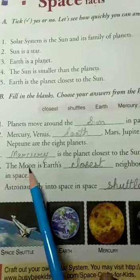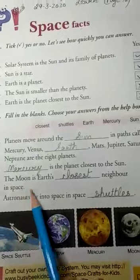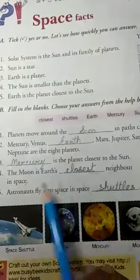Number four: The moon is Earth's closest neighbor in space. The Earth's closest neighbor in space is the moon.